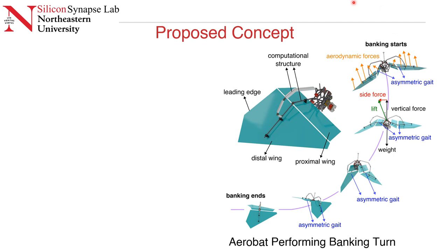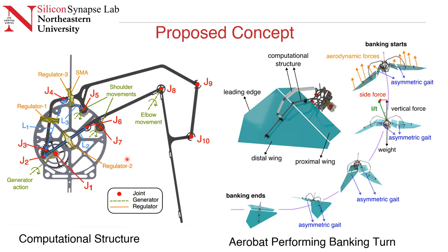We had to make some changes in the mechanical design of the computational structure. This computational structure is a crank and four-bar linkage mechanism with total of 10 joints and one motor called a generator. On the linkage L1, L2, and L3, we put three shape memory alloy-based actuators, which we call regulators. These actuators change the overall length of these three linkages, hence affecting the gait and making the gaits of both wings asymmetric, and finally achieving orientation control.